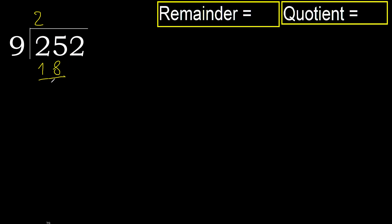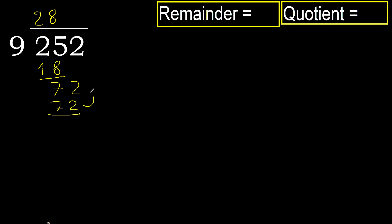Subtract 7, next. 72. 9 multiplied by 9 is greater, so multiply by 8: 72 — not greater.